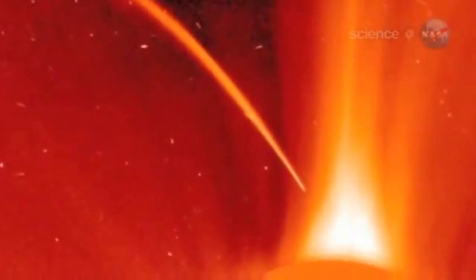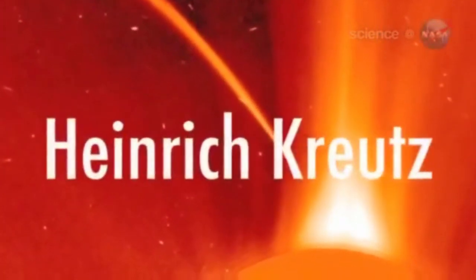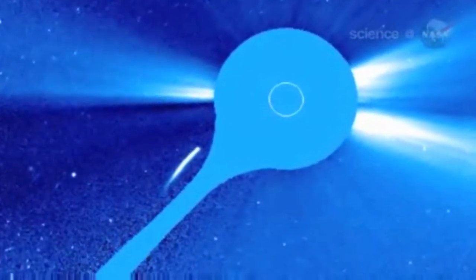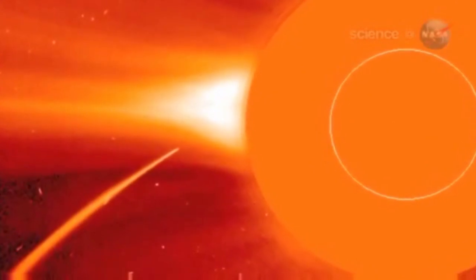Kreutz-sungrazers are fragments from the breakup of a single giant comet many centuries ago. They get their name from 19th-century German astronomer Heinrich Kreutz, who studied them in detail. Several Kreutz fragments pass by the sun and disintegrate every day. Most, measuring less than a few meters across, are too small to see. But occasionally, a big fragment like this one attracts attention.